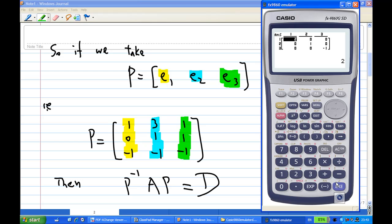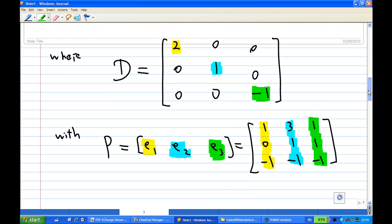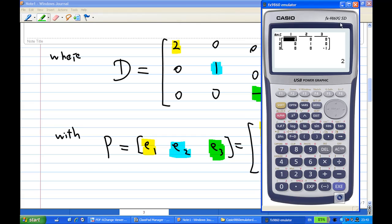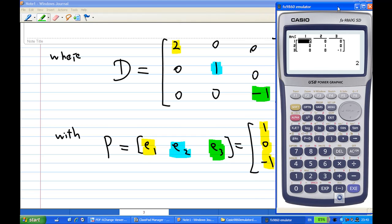You see that matrix is 2, 0, 0, 0, 1, 0, 0, 0, minus 1, which verifies this. That D is equal to this one. So, I have actually verified the answer by using my calculator. That is the end of the recording.